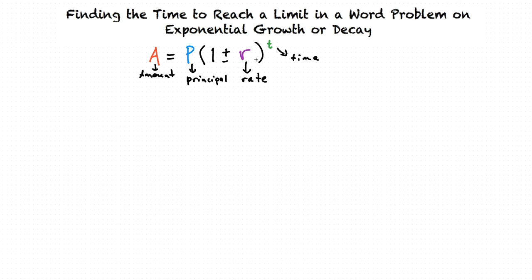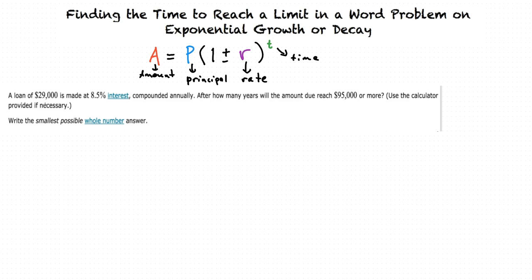Let's try an example from Alex. A loan of $29,000 is made at 8.5% interest, compounded annually. After how many years will the amount due reach $95,000 or more? Use the calculator provided if necessary. Write the smallest possible whole number answer.